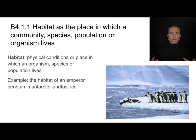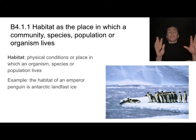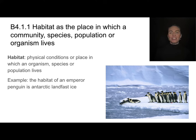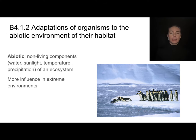A big section of this topic is just understanding vocabulary. When we say habitat, what we're talking about are the physical conditions where an organism, species, or population lives. So we're talking about those abiotic things. These emperor penguins live on this Antarctic land fast ice — that ice is their habitat. Abiotic means non-living: bio means living, abiotic means non-living.